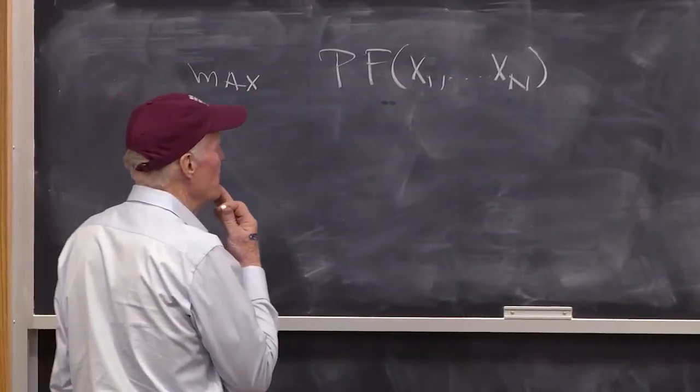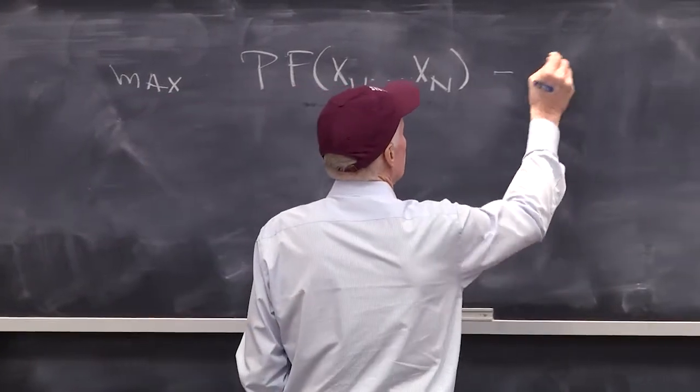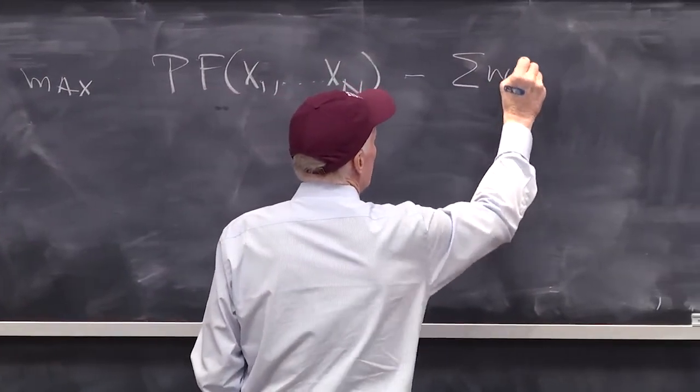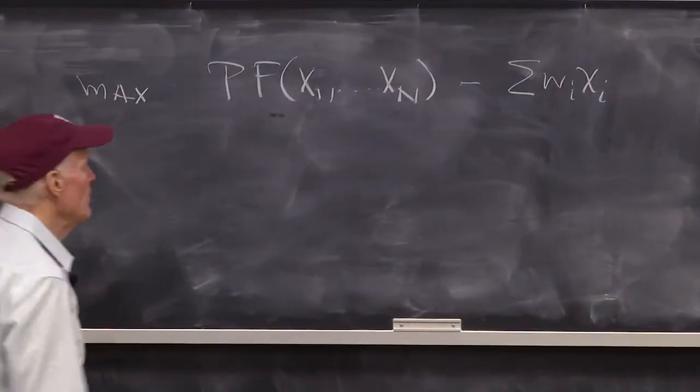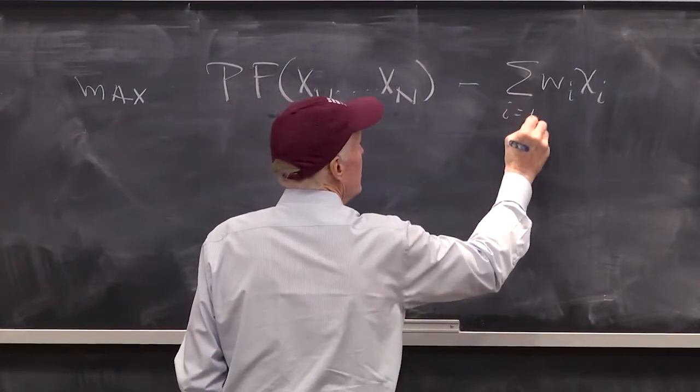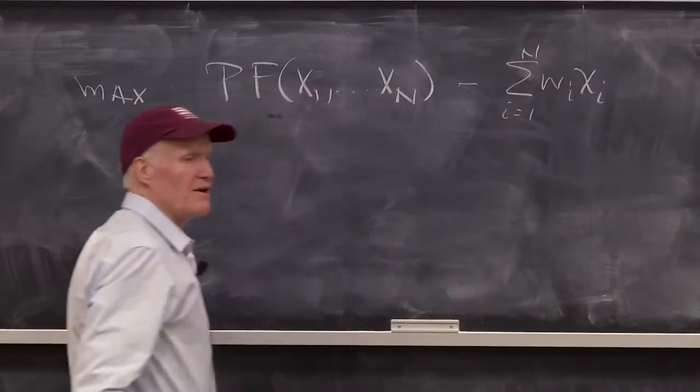But anyway, so that's going to be our revenue side. And then we got the sum of wi xi, or the cost of the inputs, i equals 1 to n. So that's the firm's maximization problem.